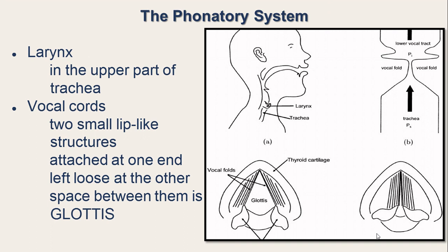The phonatory system consists of the larynx and the vocal cords. The larynx is situated in the upper part of the trachea. Inside the larynx there are two small structures which look like lips — these are called the vocal cords. They are attached at one end and left loose at the other end.